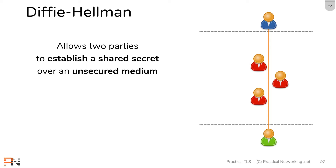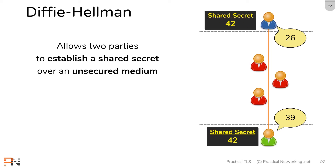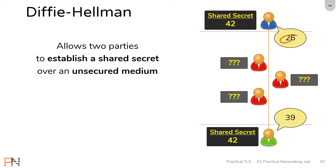That is where Diffie-Hellman comes into play. What Diffie-Hellman allows these two users to do is exchange certain values and then combine the values which were exchanged with other values which were never exchanged to produce a shared secret. Anybody listening in on the wire will have heard these public values, but there's no way to combine just these public values to get the shared secret.